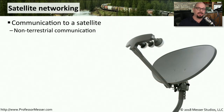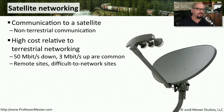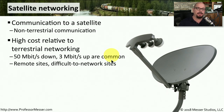Our internet connectivity doesn't have to be limited to connectivity on Earth. We can sometimes connect to the internet using satellites in space. Satellite networking allows us to communicate directly to a satellite, which then sends data to a station on Earth and reverses that process to get data back to us. This has a relatively high cost compared to traditional terrestrial networking such as cable modem or DSL, but speeds are pretty good — around 50 megabits per second down and 3 megabits per second upstream. This allows connectivity for remote sites that may not have access to cable modem or DSL.